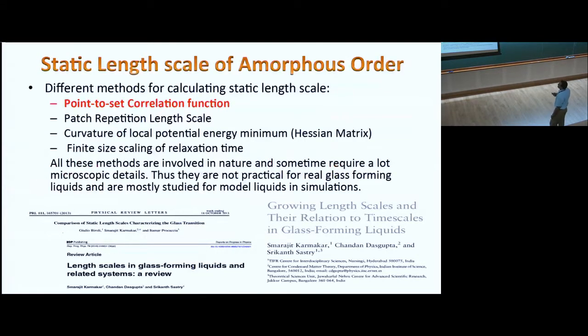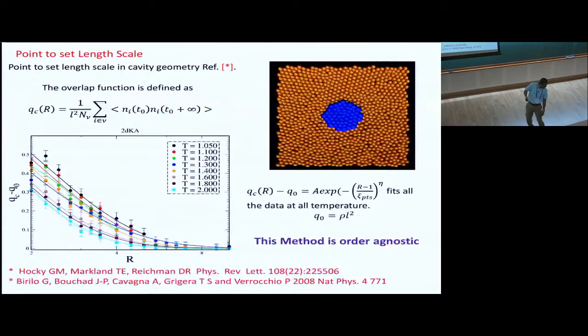This is the old story. Then certain other things came up. The dynamic length scale seems to be not enough, there are also static length scales. There are lots of literature, like there are different ways to do it. One can set path reputations, curvature of local potential energy minimum, finite size scaling of relaxation time. We have written two review papers which you can look at to get full details about this. My aim is to tell you that this length scale, dynamic heterogeneity length scale and the static length scale, there are many different ways to do it.